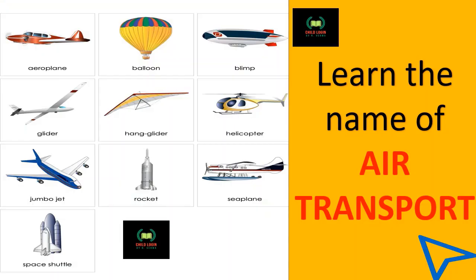Hello kids, welcome to my channel. Today we will learn about air transport. Look at the picture — what is this? These are all modes of air transport. First of all, we have to know what air transport is. Air transport is a mode of transport that moves through the air, made in such a way that it can glide in the air.